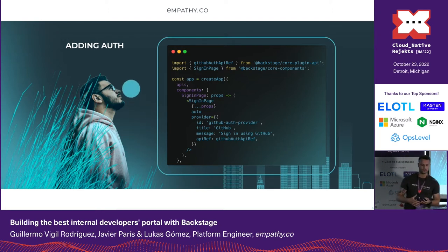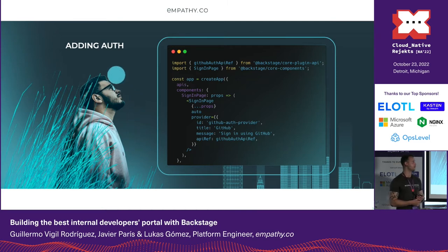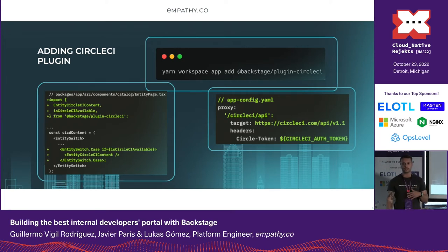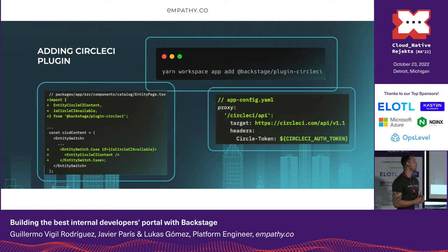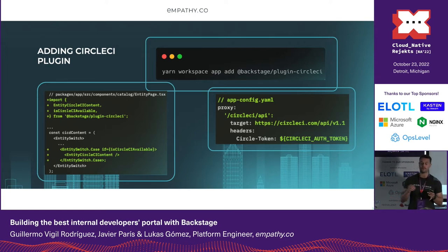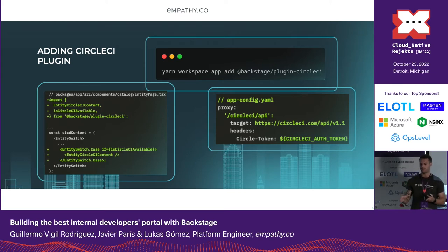The next step was to add a plugin. We decided to test the CircleCI plugin. The steps were: add the plugin library, set up the app.config file, and modify the backend — the same common steps for any plugin or modification to Backstage. This pattern became clear: add the library, modify the app.config file, and modify the backend.